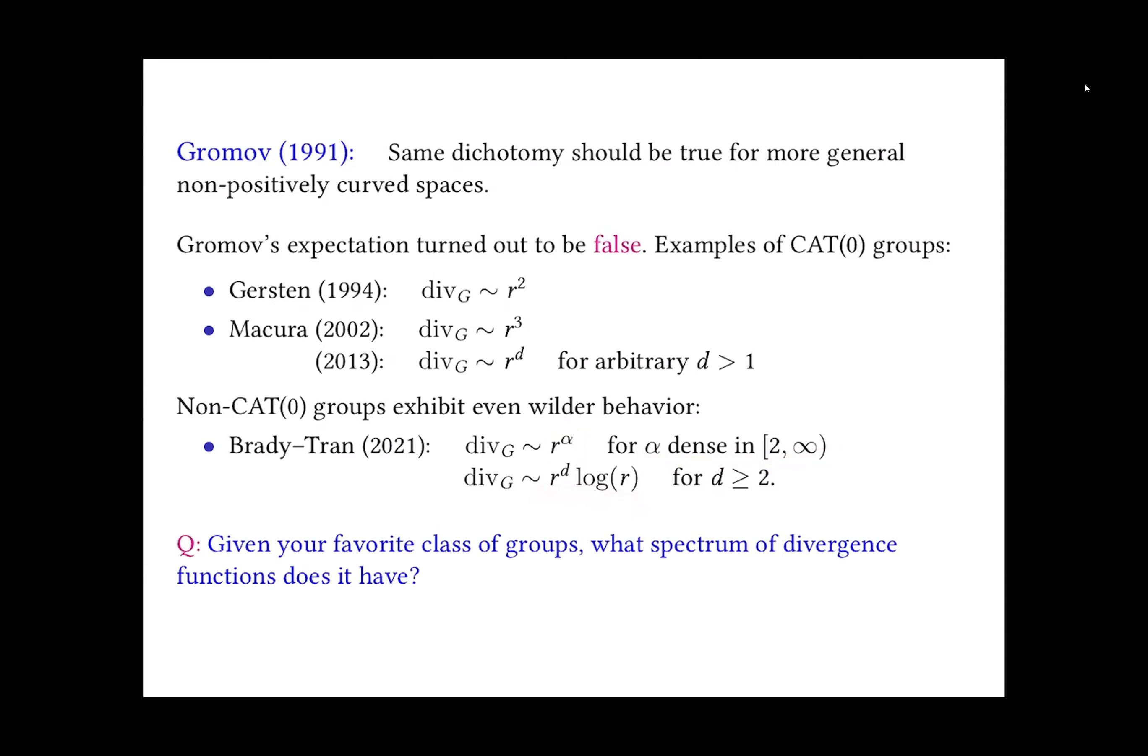And if we step away from the class of CAT(0) groups, even wilder behavior is observed. Very recently, Noel Brady and Hank Tran from University of Oklahoma proved that there are groups which exhibit divergence of order R to fractional exponent, fractional, even non-rational exponent, and this parameter alpha is dense in interval from 2 to infinity. And also, they came up with similar examples where it's not even a polynomial. It's a function of type polynomial times logarithm. So, that's a very interesting invariant, worth studying. And the natural question is, given your favorite class of groups, what spectrum of divergence functions does it have? And depending on your preference or taste, we can look at different groups. And in this project, we look at Coxeter groups. This is a time to pause, because I'm going to now switch gear and speak about Coxeter groups. Do we have any questions or clarifications?